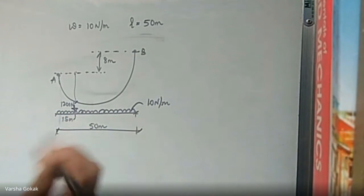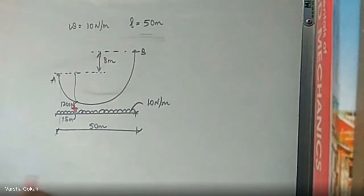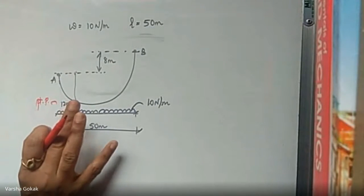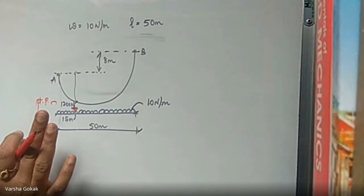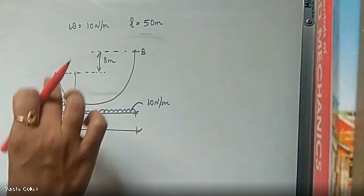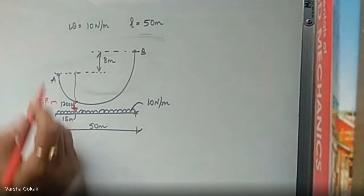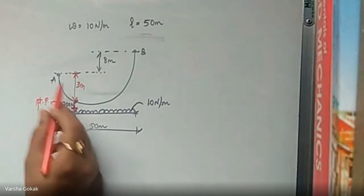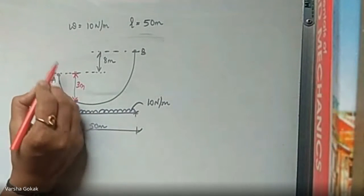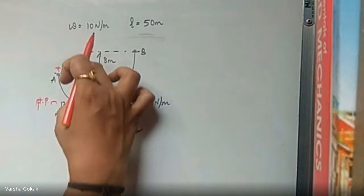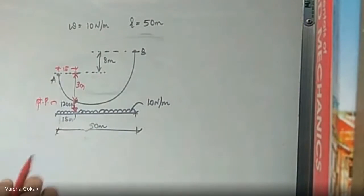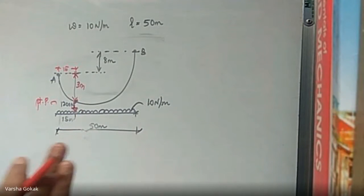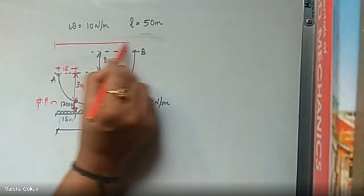The point load of 1200 Newton is at 15 meters from A. This load is 3 meters below the left support, so the vertical distance from left support to the load point is 3 meters, and the horizontal distance is 15 meters. Assuming the weight of the cable is spread uniformly on the horizontal span, find the maximum tension in the cable.